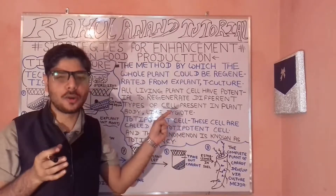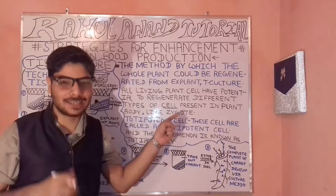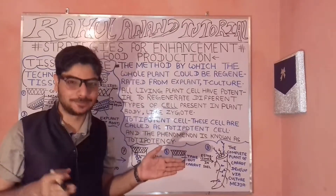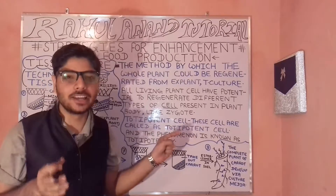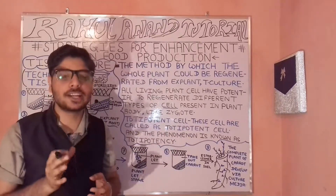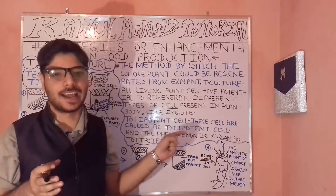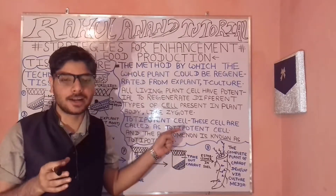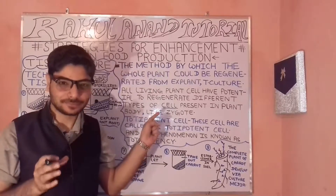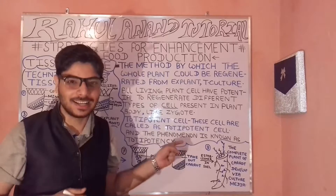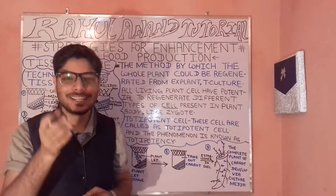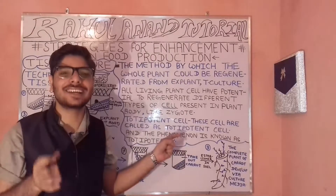Tissue culture is a method in which a whole plant is developed from a pre-existing plant or from an explant. This process is known as tissue culture. All plant cells have a unique potential — they can regenerate an explant or a new baby plant from the pre-existing plant body. The cells having this potential are known as totipotent cells.